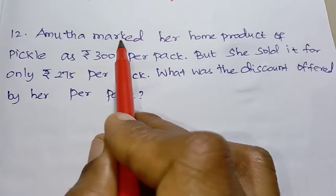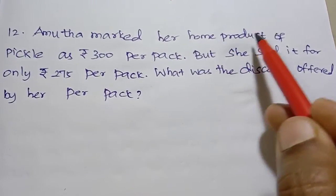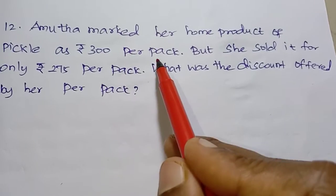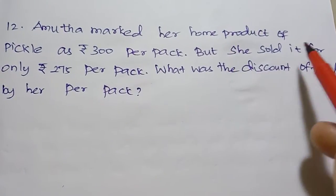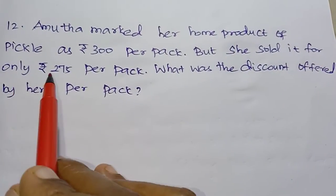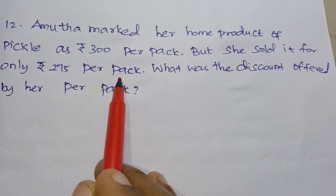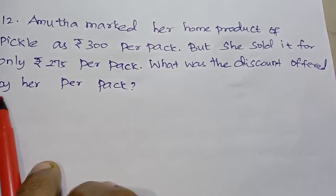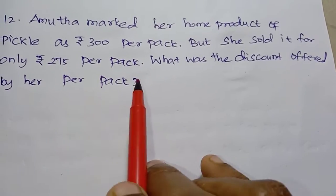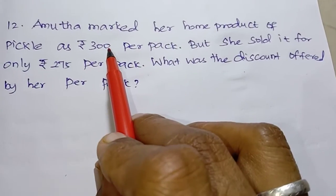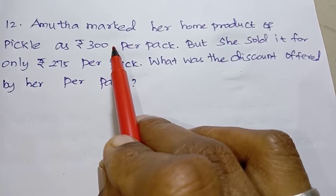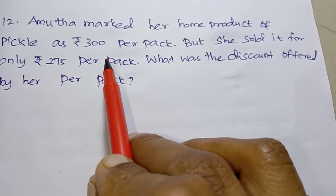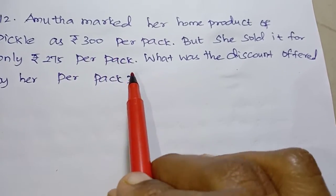Next, question 12: Amuda marked her home product of pickle as Rs. 300 per pack, but she sold it for Rs. 275 per pack. What was the discount offered by her per pack? Marked price is Rs. 300, sold for Rs. 275 per pack.